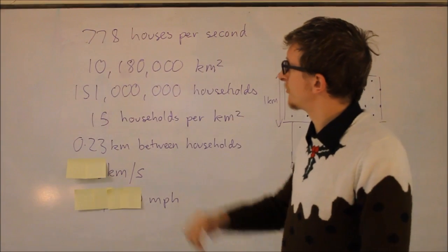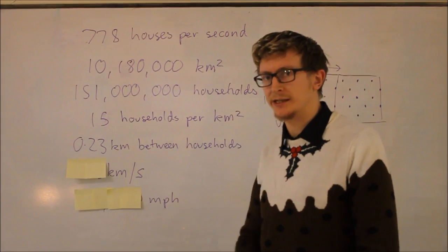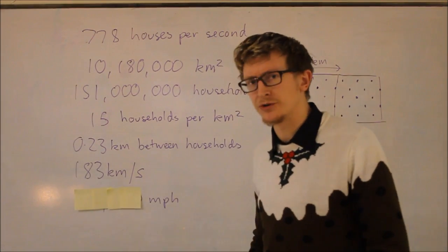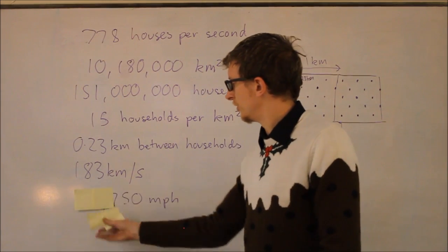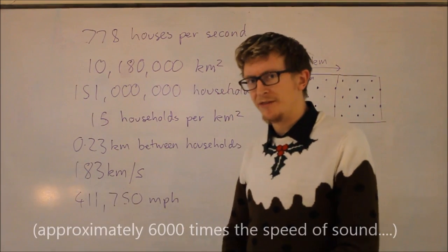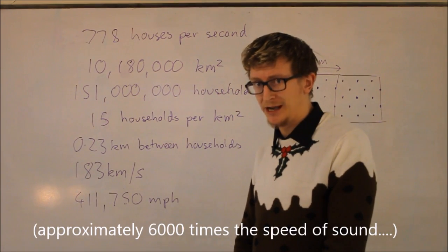That means if Santa travels through 778 houses per second, he has to travel a distance of 183 km every second. In other words, this is a speed of 411,750 miles per hour.